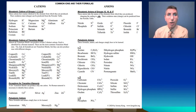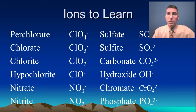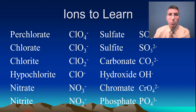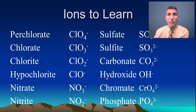We're going to use this chart as we go through the process of writing formulas for ionic compounds. There are 12 of the most common polyatomic ions here, and I strongly recommend you learn these by heart — memorize them. As you progress in chemistry, you'll need to learn even more polyatomic ions, so they're fairly important in your study of chemistry.